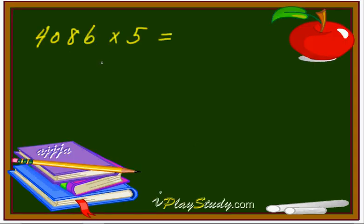Wow, a big number multiplication: 4086 times 5. Can you do this one in your brain? You know what? I have a trick.